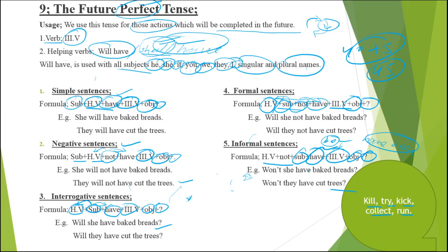Second verb is 'try.' Practice: You try fast. You do not try fast. Do you try fast? Don't you try fast? You tried fast. You did not try fast. Did you try fast? Didn't you try fast? You will try fast. Will you try fast? Won't you try fast? You are trying fast. Are you trying fast? Aren't you trying fast? You were trying fast. Were you trying fast? Weren't you trying fast? You will be trying fast. Won't you be trying fast? You have tried fast. Have you tried fast? Haven't you tried fast? You had tried fast. Had you tried fast? Hadn't you tried fast? You will have tried fast. You will not have tried fast. Will you have tried fast? Will you not have tried fast? Won't you have tried fast?